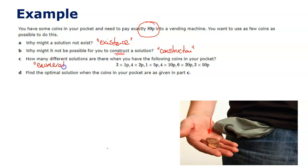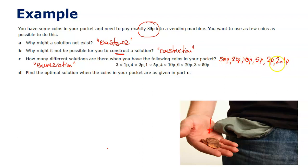Part c — how many different solutions are there — is clearly an enumeration question. For example: a 50p, a 20p, a 10p, a 5p, and two 1p coins makes 89p. That's one way; now listing all different ways with those coins gives the enumeration. The answer turns out to be 20 different ways — I'll leave you to list them all.